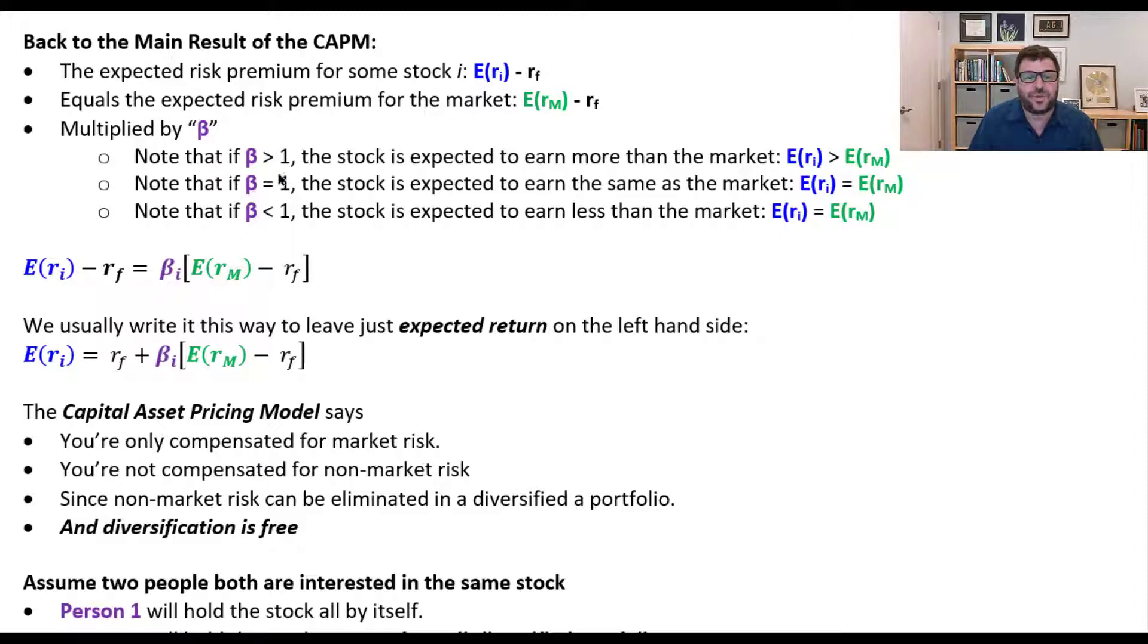So note that if beta is greater than one, the stock is expected to earn more than the market. The expected return of the stock is greater than the expected return of the market. If beta equals one, then these two are the same and the expected returns are equal. And if beta is less than one, then the expected return is less than the market's return. I have a typo there - less than the market's return.